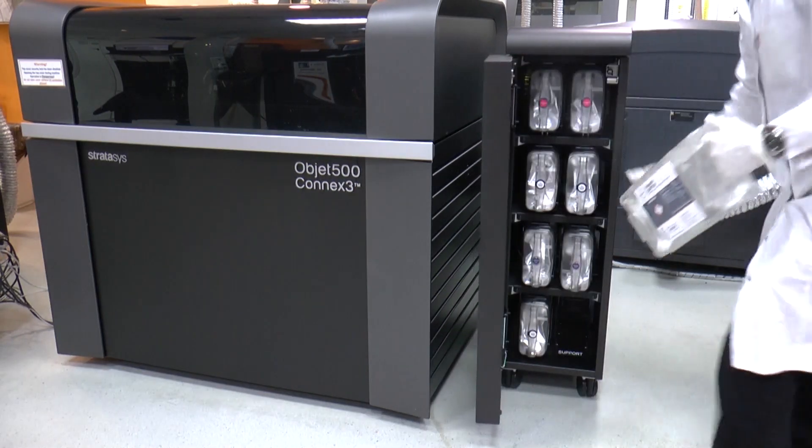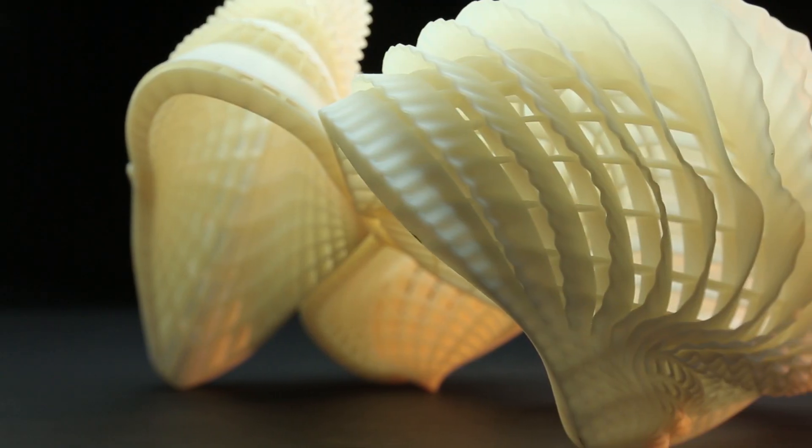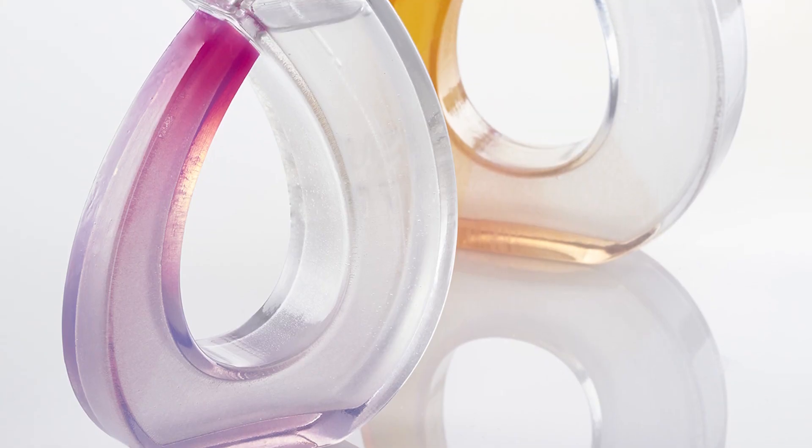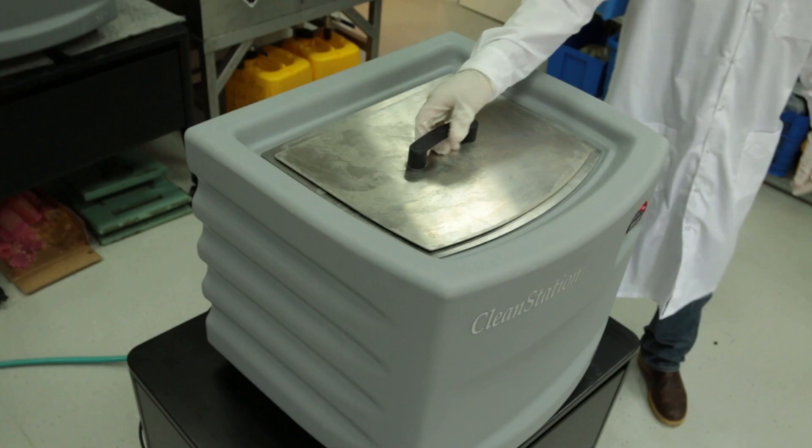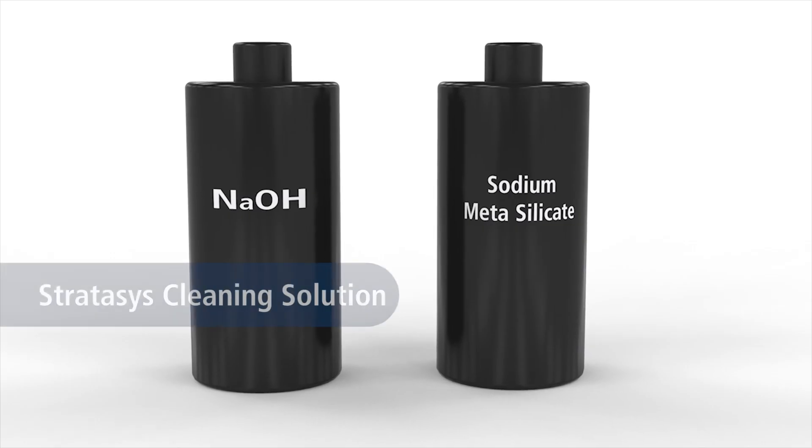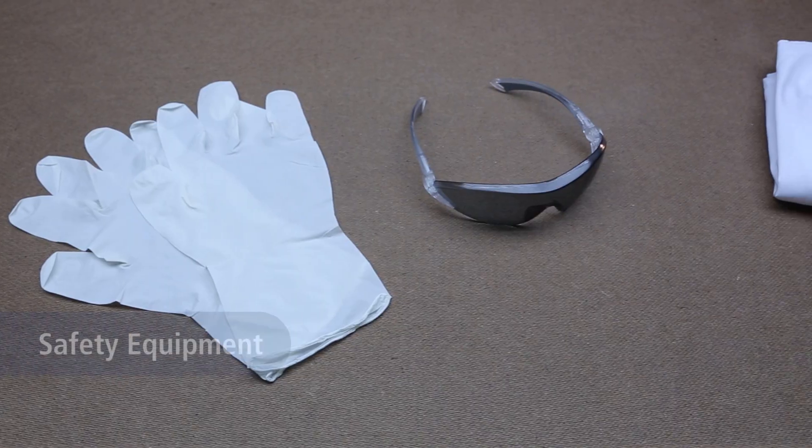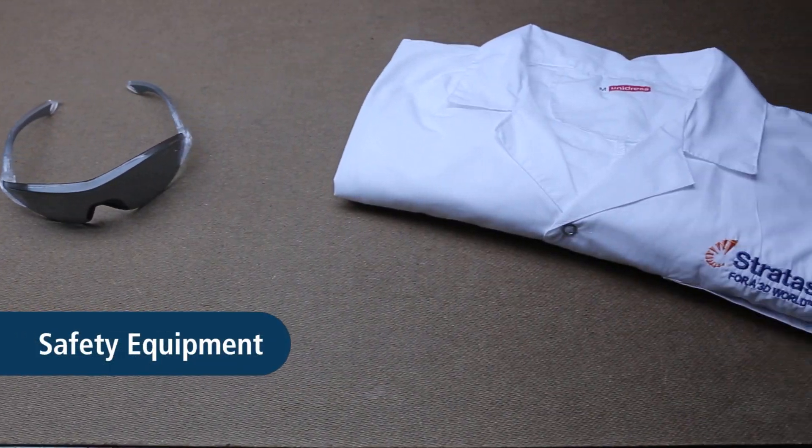SUP706B soluble support material is ideal for parts with intricate geometries, internal cavities and batches of small parts. You will need these basic components: a cleaning station, Stratasys cleaning solution, safety equipment and an optional water jet.